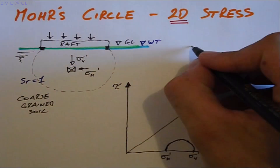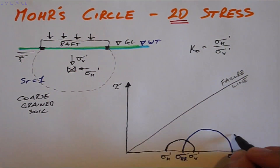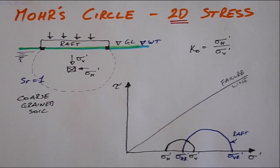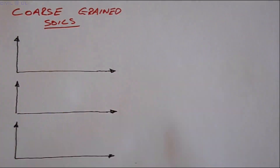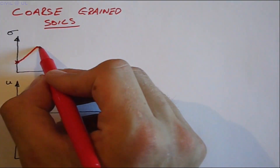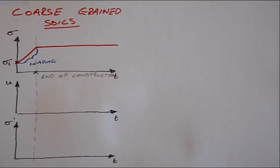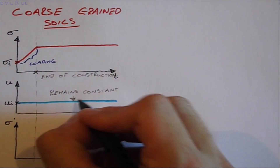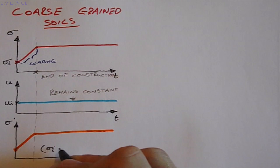The Mohr's circle for these stresses shows the circle is well away from the failure line — this is known as the K-nought, or at-rest, condition. If the raft is now constructed, the Mohr's circle shifts to the right and increases in diameter, because the raft loading increases both the horizontal and vertical normal stresses. These increases take place in unison as the load is transferred directly into greater intergranular stresses. Any tendency for the pore water pressure to increase does not materialize, as the permeability of the soil permits water to flow rapidly out of the void space.